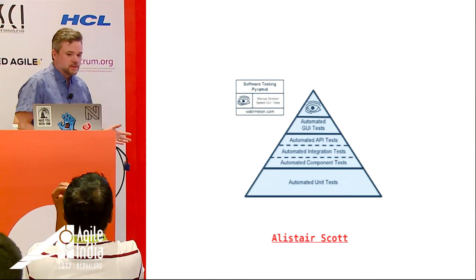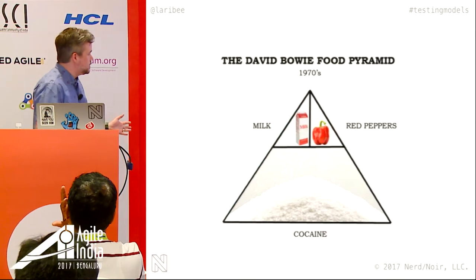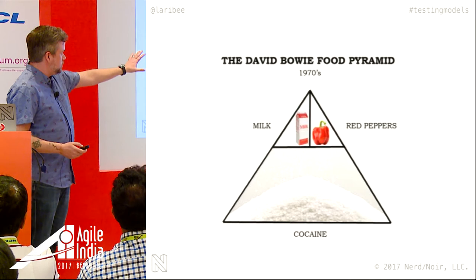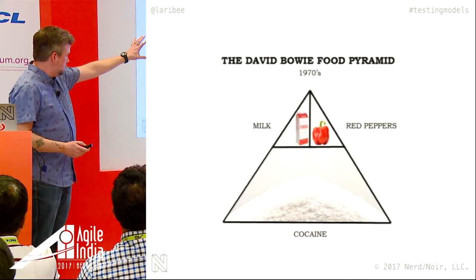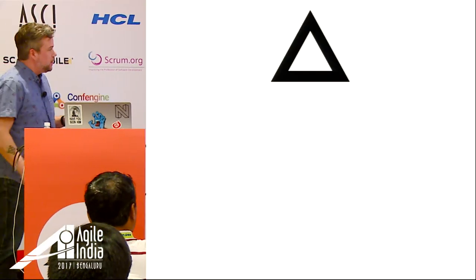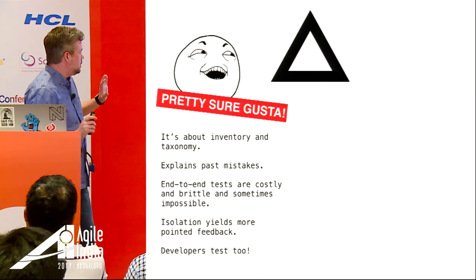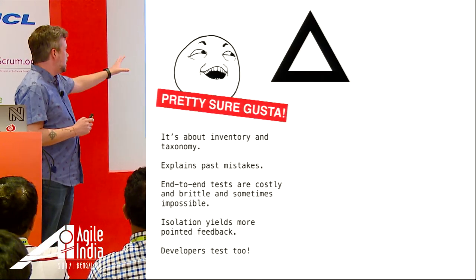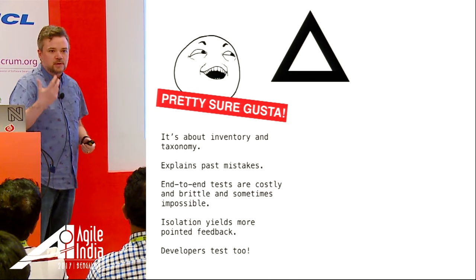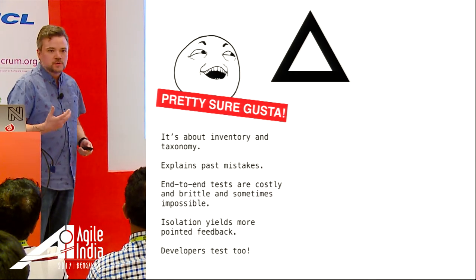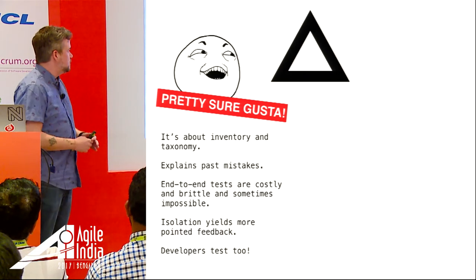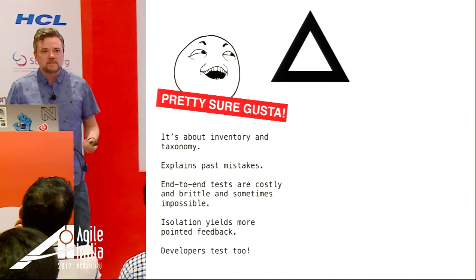But pyramids — there are all kinds of pyramids. This, for example, is David Bowie's diet in the 1970s: milk, red peppers, drugs. Pyramids have some weaknesses. What I like is that it's about inventory taxonomy — it gives us a vocabulary for what kinds of tests, who's doing those tests. A basic taxonomy of testing, plus a notion of inventory. End-to-end tests are costly and brittle, sometimes impossible.